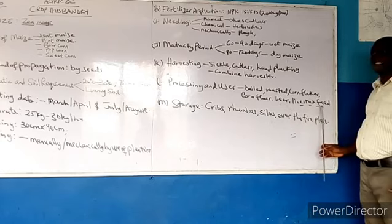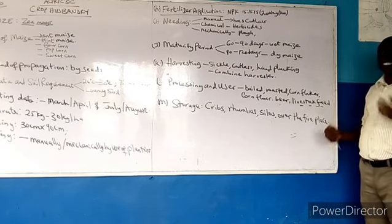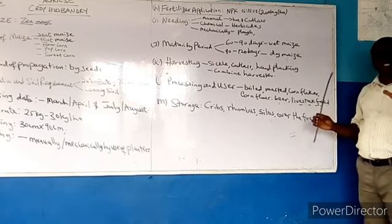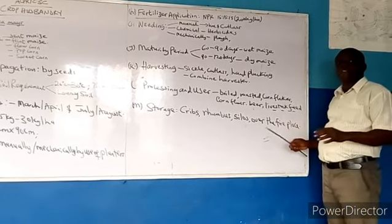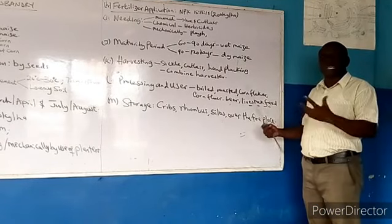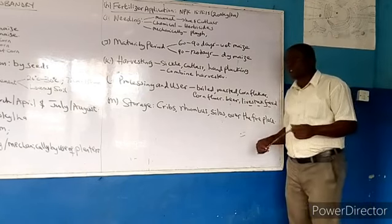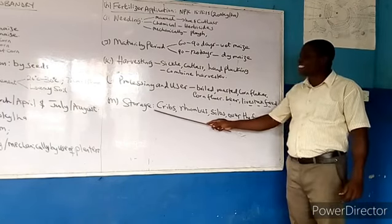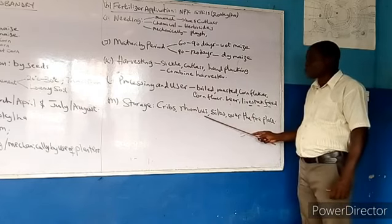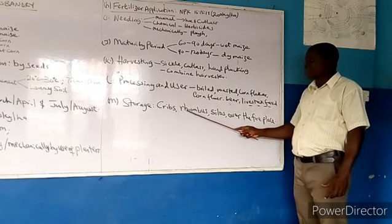The last topic is storage. After harvesting, the maize must be dried first to reduce its moisture content, because if the moisture content is not reduced, the maize will begin to decay and rot quickly. When properly dried, you can store maize crops in cribs, or locally in what are called rhumbus, which are mostly found in other parts of Nigeria.